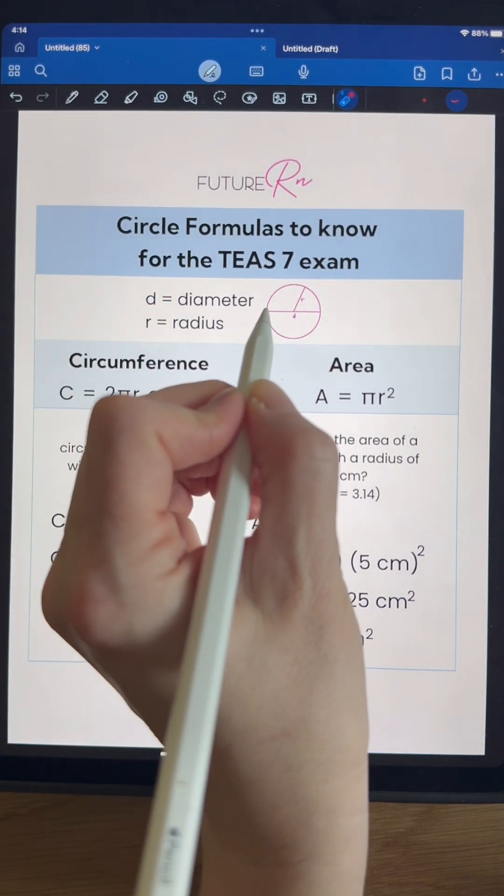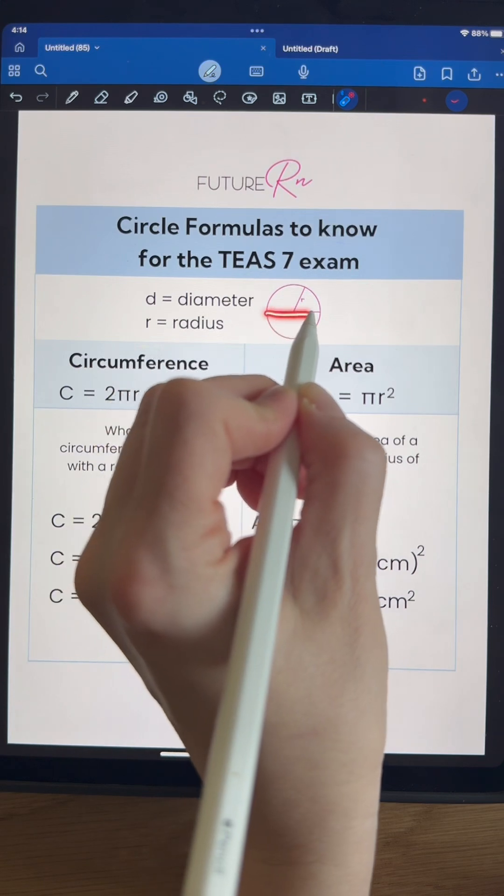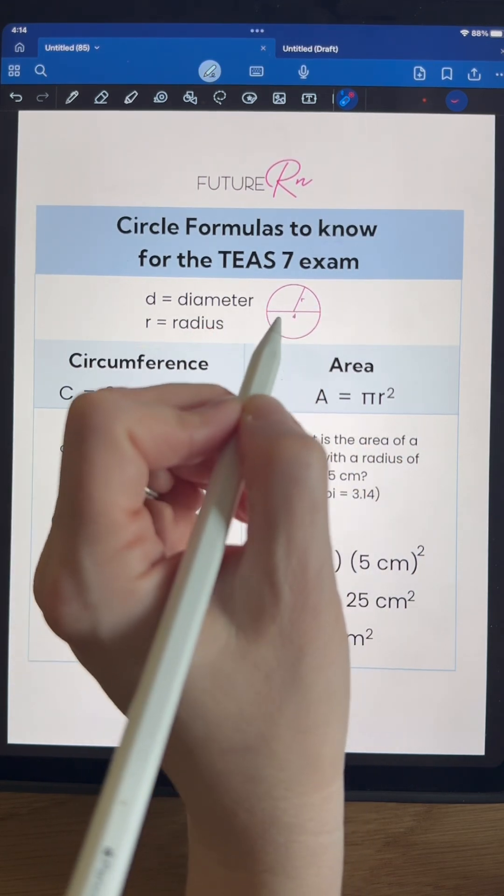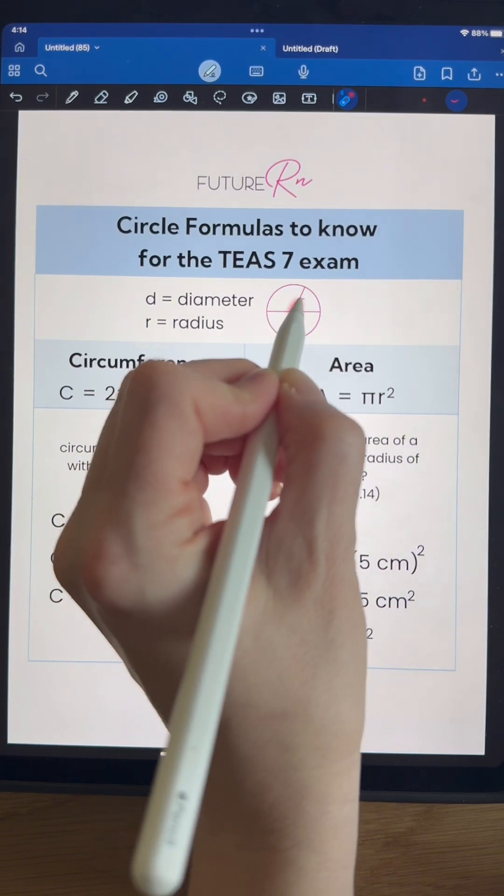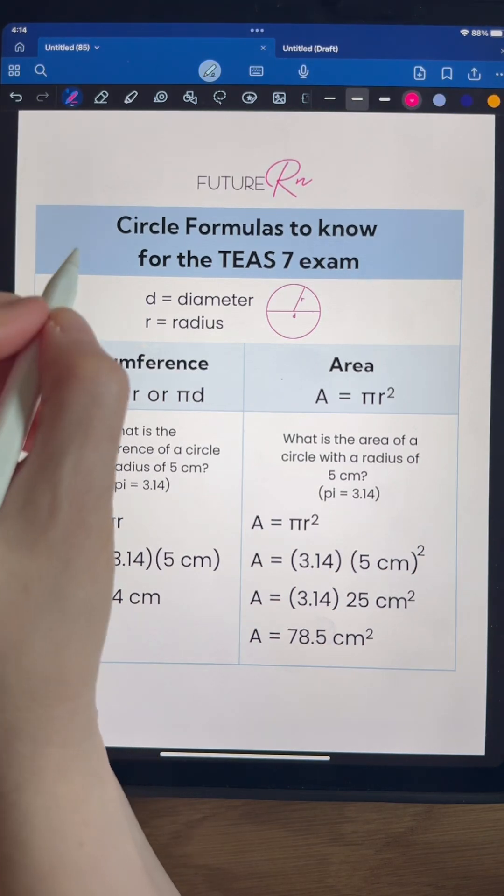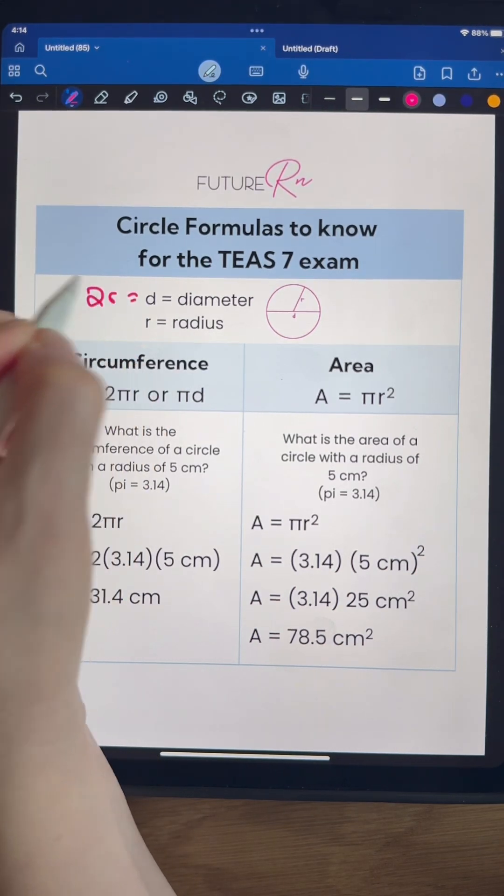So the diameter is a measurement from end to end of the circle passing through the middle, that's your diameter. And then the radius is half of that because it is from the center of the circle out to the edge. So your diameter is really also equal to 2 times R.